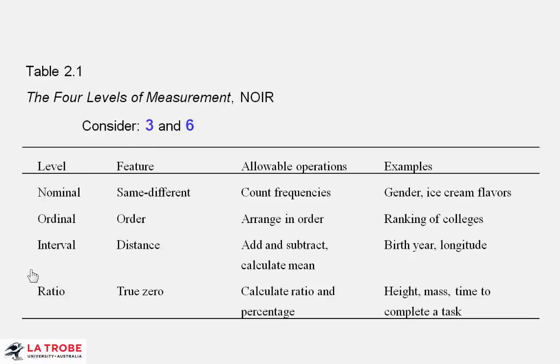At the other end of the measurement scale ratio measure, then we do make use of the full range of characteristics of these numbers. So if we have six cherries on the cake and three cherries on that other cake, then we can say, well, we've got more cherries on this cake.